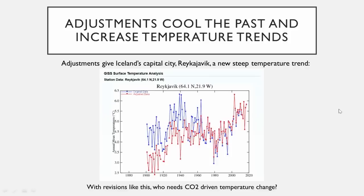Here is Reykjavik, Iceland, the capital of Iceland. The blue is the original data and the red is the adjusted data. If you draw a line between the red and the blue, the red is steeper — more climate alarm, more worry because the temperature appears to be increasing faster. But in reality it is not. It's an adjustment.